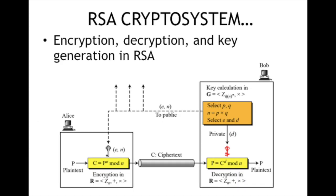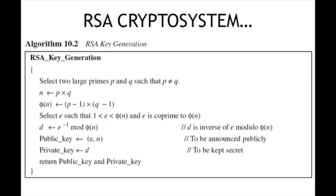In the RSA cryptosystem, we select two prime numbers p and q such that p is not equal to q. Then we compute n as p multiplied by q. Phi of n is computed as (p minus 1) multiplied by (q minus 1). We select a value e between 1 and phi(n) such that e is co-prime to phi(n). d is e inverse mod phi(n). e and n form the public key, and d is the private key.